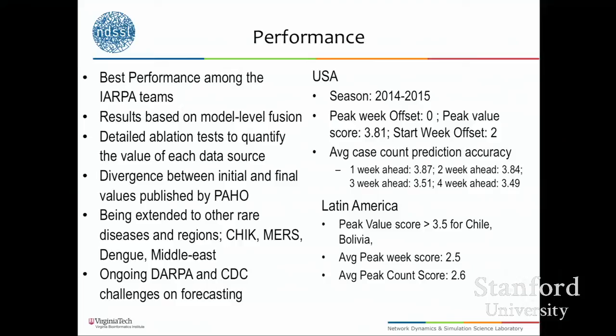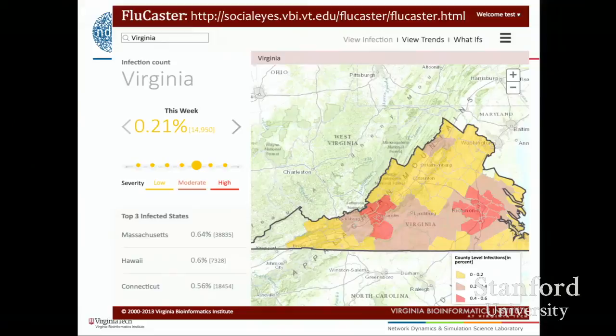We've started to do forecasts for other diseases as well — chikungunya and dengue. There was a CDC competition last year — Jeff Shaman's group from Columbia won for forecasting flu in the US. There's also a DARPA competition running right now for chikungunya that we are a part of. This remains an open question that will continue to be worked on for years to come.